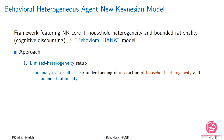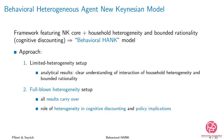Our approach is twofold. We start with a simple model with limited heterogeneity — just two types of households — which gives us analytical insights and closed-form results. We can then relax these assumptions, move to a full HANK model, and show that all the results carry over. We can also dig deeper into the role of heterogeneity in the behavioral bias, and then look at the policy implications of the model.